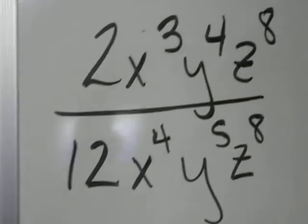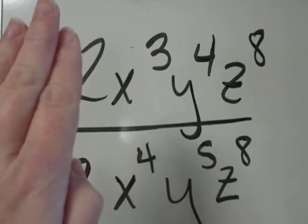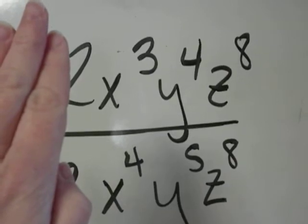Then look just at your variables. The rules here are that we want to subtract 3 minus 4, 4 minus 5, 8 minus 8.